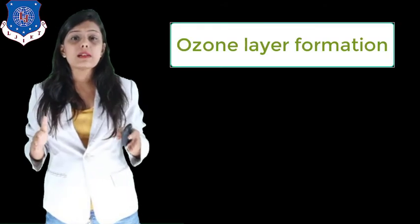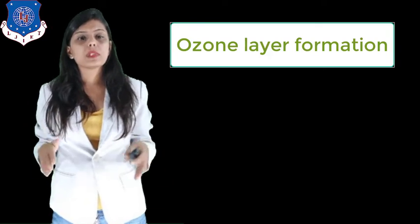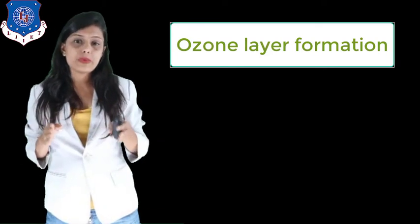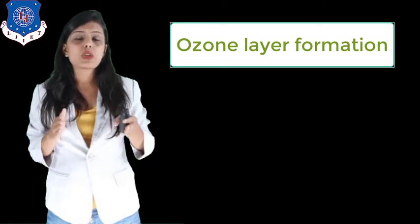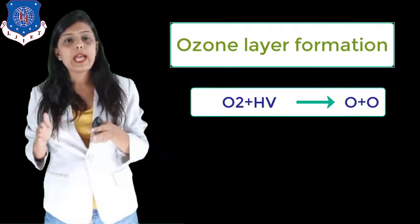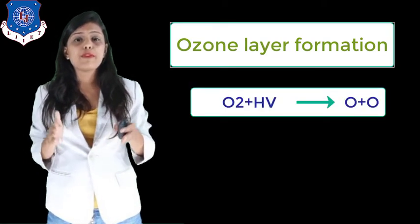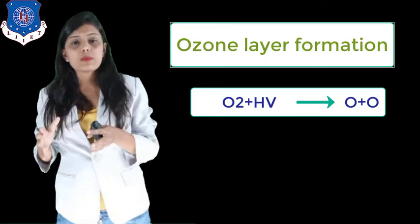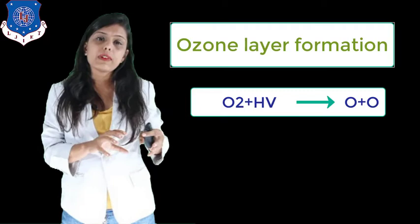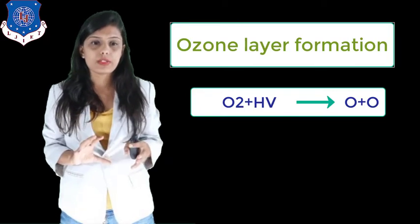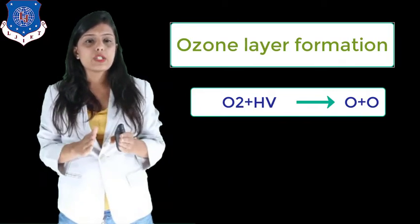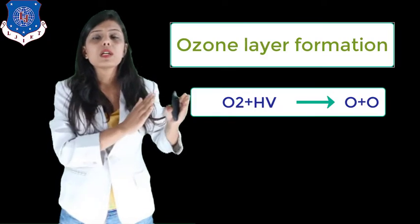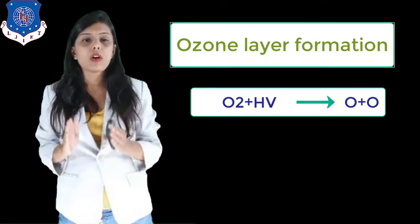Now let us learn how ozone layer is formed. Ultraviolet rays decompose oxygen into atomic oxygen by photolytic decomposition. The oxygen molecule reacts with ultraviolet rays producing two atomic oxygen: O2 plus UV gives O plus O.